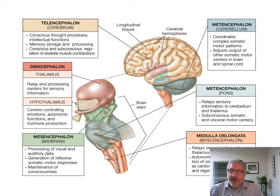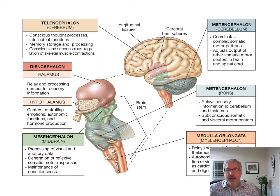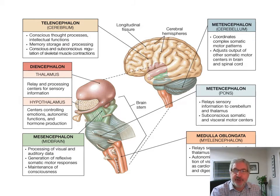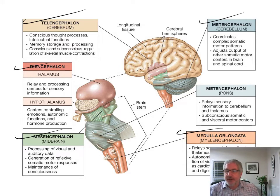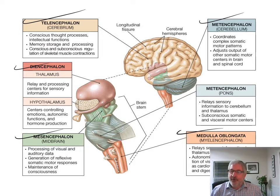These names come from embryology. You have what's called the telencephalon, the metencephalon, the diencephalon, the mesencephalon, and the myelencephalon. The telencephalon is the cerebrum, the metencephalon is the pons, the diencephalon is the thalamus and hypothalamus, the mesencephalon is the midbrain just below the diencephalon, and the medulla oblongata is the myelencephalon. Those words come from embryology — there are different bulges that occur in each section of the neural tube.